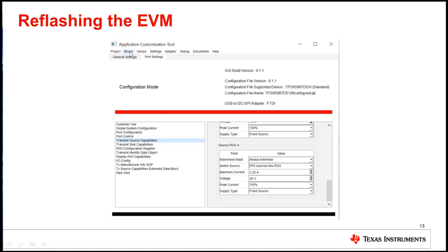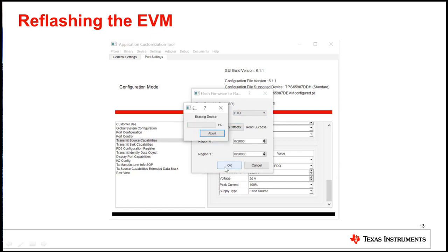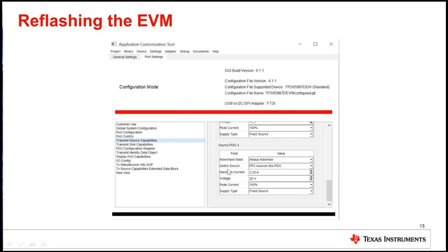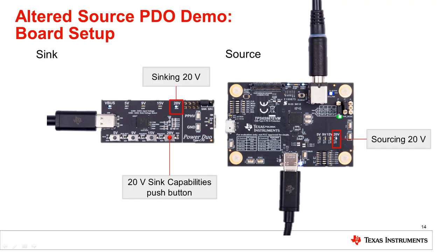To flash the EVM with the new project, select the binary menu, press flash from current project, select your USB to SPI adapter, read current region offsets, and select OK. Once the board has been successfully flashed, be sure to cycle power on the EVM. When the sink board is connected and the 20 volt sink capability option is selected, a 20 volt contract is negotiated. The 20 volt LED lights up on the EVM and the sink board.